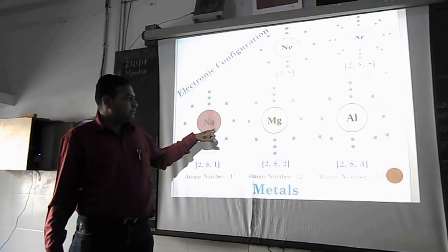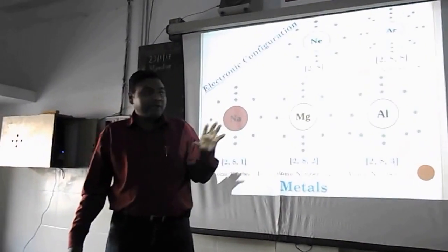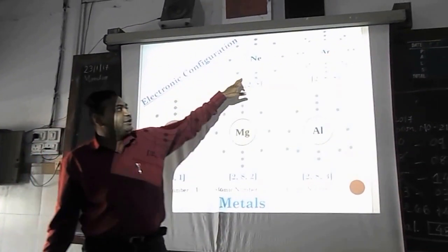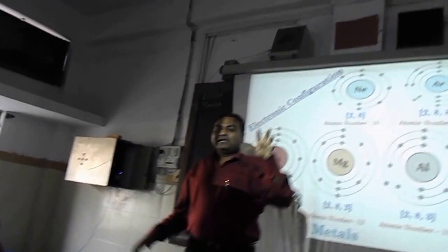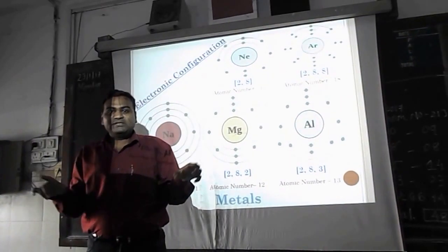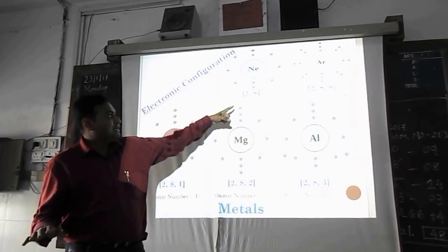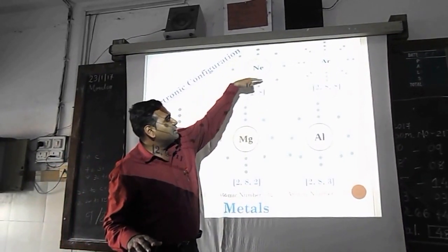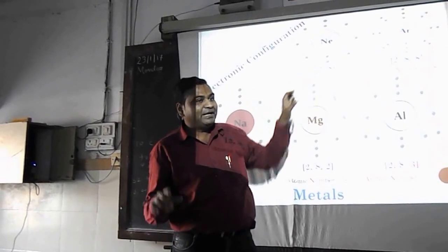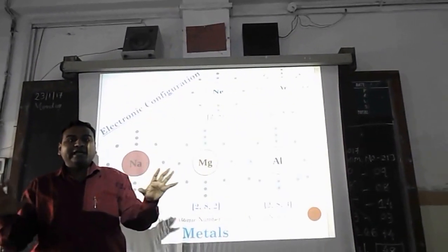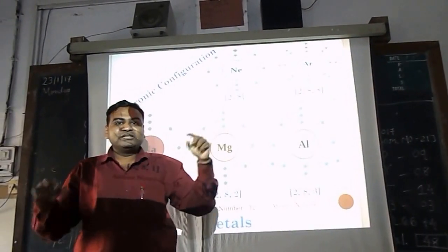Atomic number 11 is sodium, atomic number 12 is magnesium, and atomic number 13 is aluminium. Now we have also taken neon and argon here — they have completed their octet. As you already learned, if the outermost orbit is filled with 8 electrons, the element becomes completely inactive. Neon has configuration 2-8, so its second orbit has 8 electrons. Argon has atomic number 18 with configuration 2-8-8, so its outermost orbit is also filled with 8 electrons.